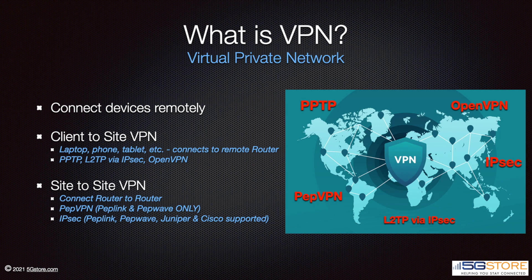When it comes to VPN connections, there are two types the Peplink hardware supports. One is considered a client-to-site connection and one is considered a site-to-site connection. Client-to-site means you are connecting a personal device, such as your cell phone, tablet, or laptop, to a router at a remote location. Our personal device is the client and the site, or server as it's sometimes referred, is our Peplink router. In the case of a site-to-site VPN connection, this is a connection between two or more routers.